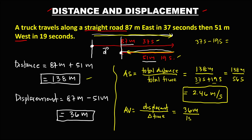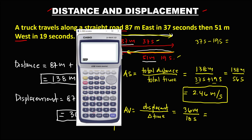To find the average velocity, we have 36 divided by 18, which equals 2 meters per second.